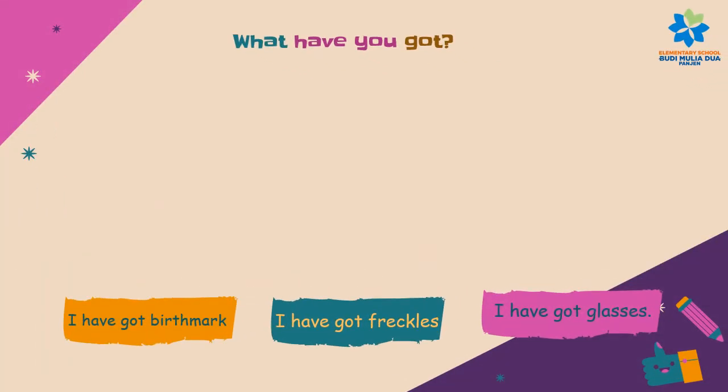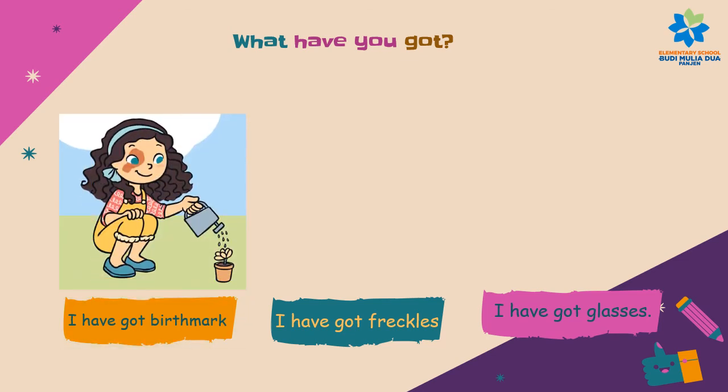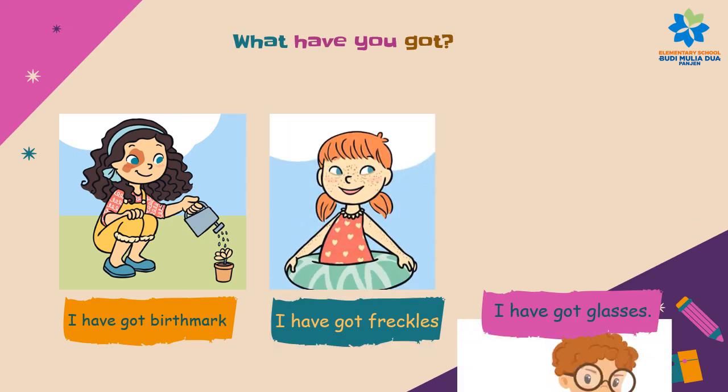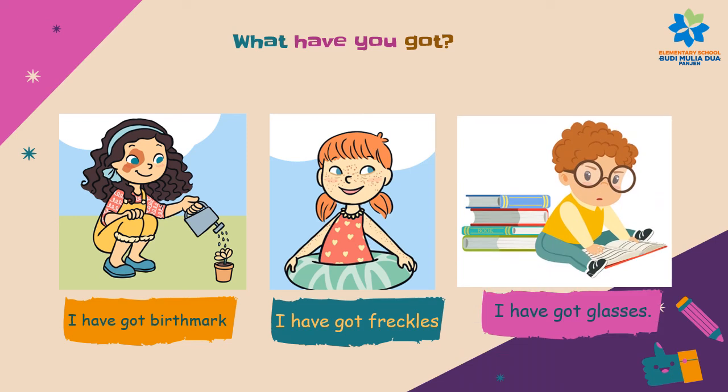Sometimes we can see different characteristics of someone's appearance. For example, I've got a birthmark around my right eye, I've got freckles on my face, I've got glasses so I can read clearly.